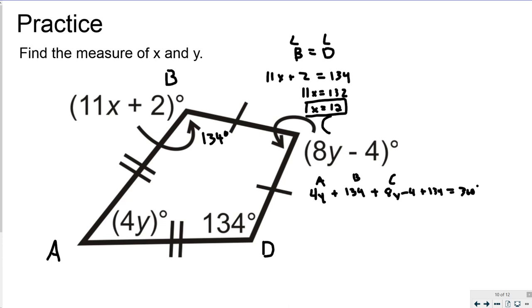So if you add it all up, 4Y and 8Y is 12Y, 134, 134 is 268, and then 268 minus 4 is positive 264, equals 360.